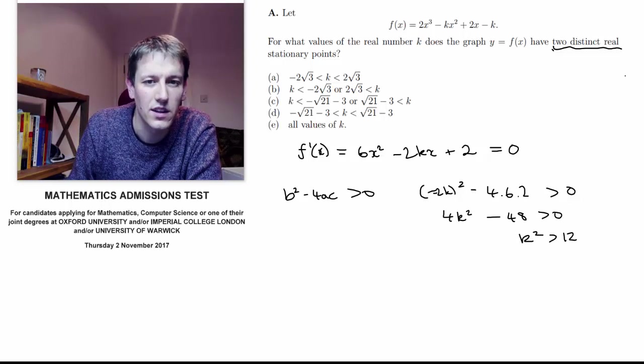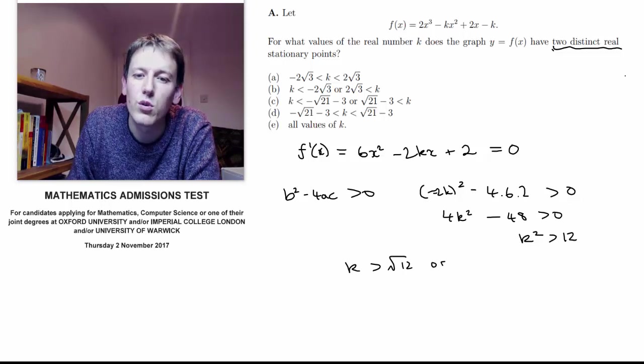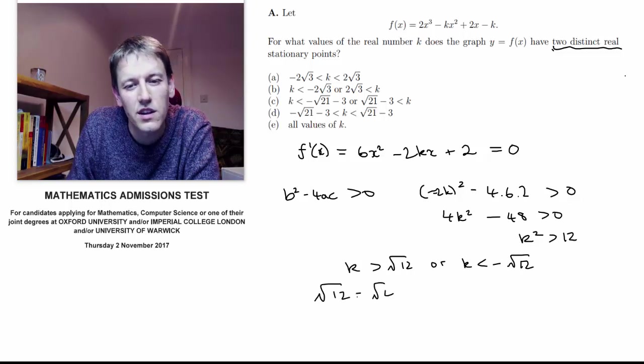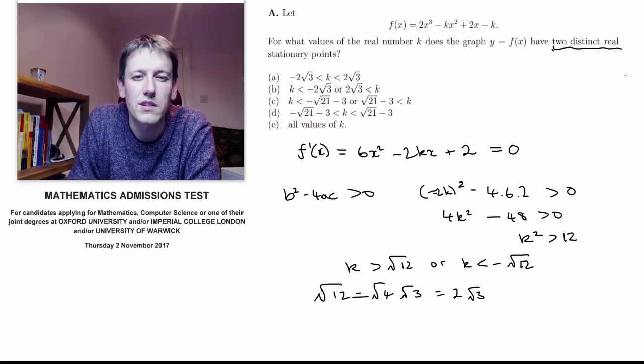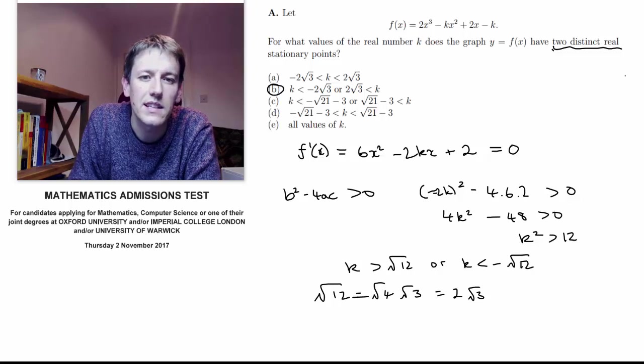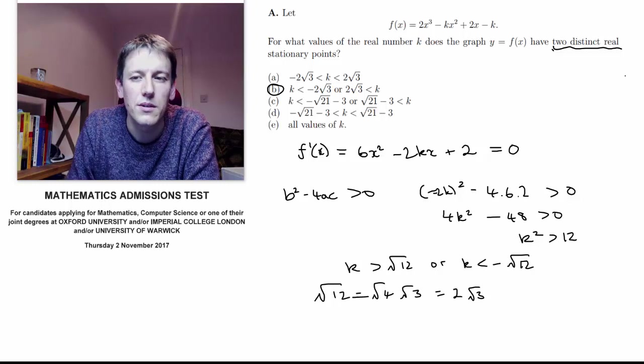And k squared larger than 12 means either k is larger than the square root of 12, or we have k is less than minus the square root of 12. And you can write the square root of 12 as the square root of 4 times the square root of 3, which is 2 root 3. So we look at the possible answers, and we see the one that matches with this is b. Either k is less than minus 2 root 3, or greater than plus 2 root 3.